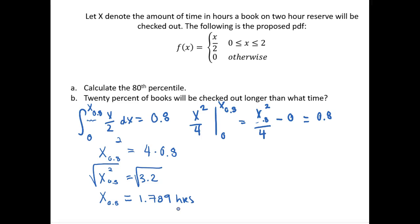Alright, so the second question is asked a little differently. It asks 20% of books will be checked out longer than what time, and so what that means is what is that cutoff value that cuts off that top 20%? Well, the top 20% is the exact same value that cuts off the lower 80%, and so we've actually just calculated this.